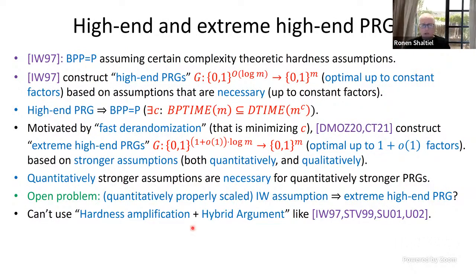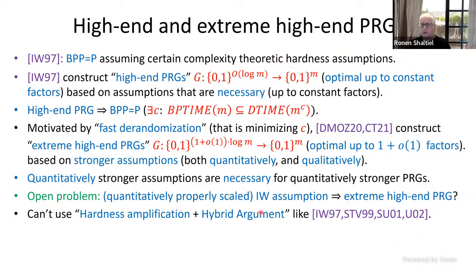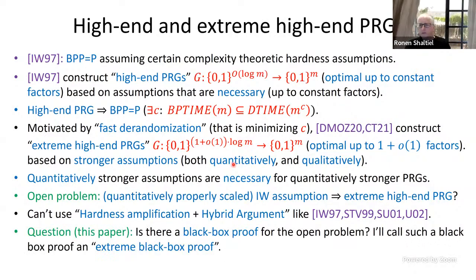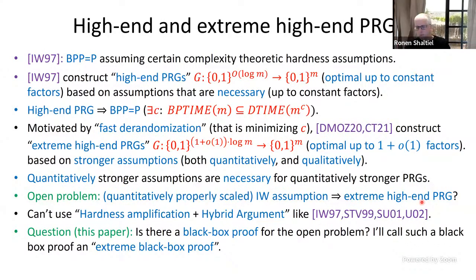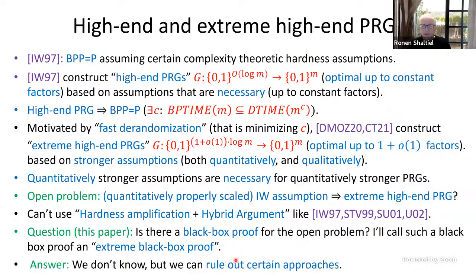The issue is that we can't use the old proofs starting from Impagliazzo-Wigderson because we can't use hardness amplification in the hybrid argument — it costs too much for extreme high-end PRGs. I'm interested in proving limitations on proof techniques. The question I want to ask is: is there a black-box proof for this open problem? I'll try to show there's no black-box proof, and call such a proof an extreme black-box proof.